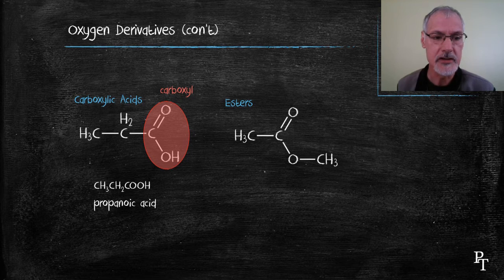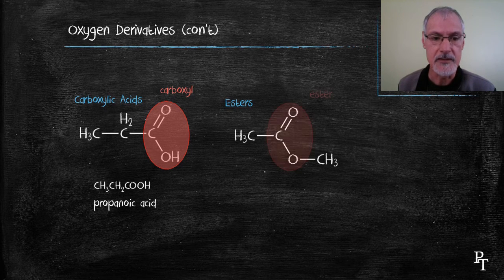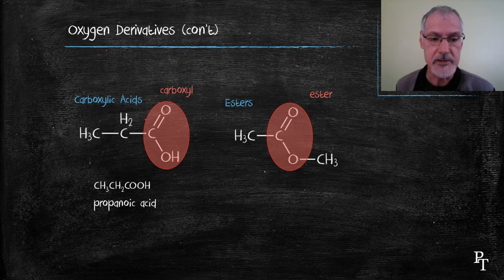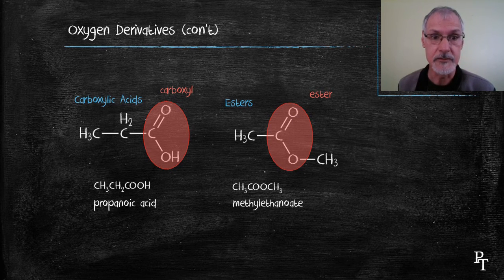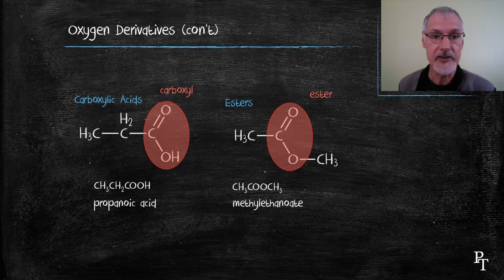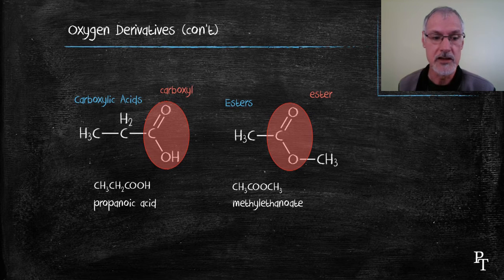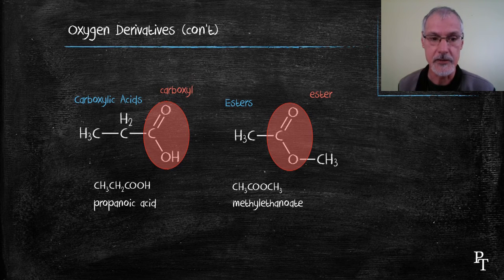Esters are formed by the combination of a carboxylic acid with an alcohol and there I've identified the ester functional group. The name of an ester is derived from the acid from which it is made. In this case ethanoic acid will form ethanoate and methanol was the alcohol so this would be called methyl ethanoate.